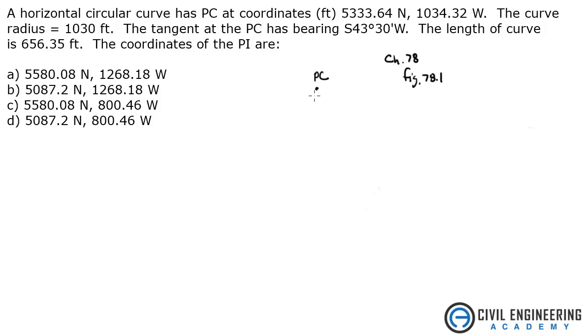That goes over these points: PC, PI, PT, point of curvature. So this point here has a northing of 5333.64 north and a westing of 1034.32 west. That's this point.